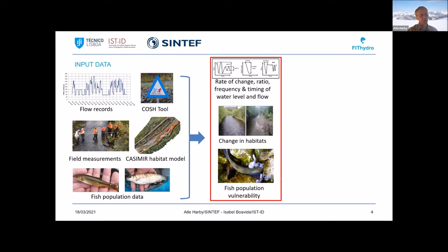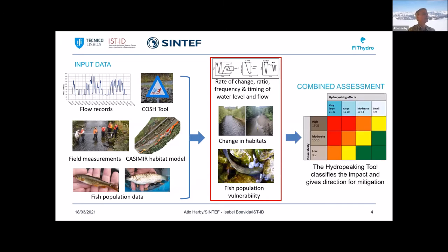The hydropeaking tool provides information on the rate of change, frequency, and flow changes of habitats and fish population vulnerability. These are combined into a combined assessment where you can classify the peaking operation from very high impact to low impact. The idea is that this can be used to help decide remediation measures — to go from the 'red squares' towards the 'green squares'.